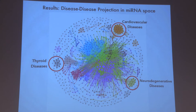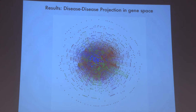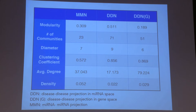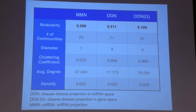In stark contrast, in the disease projection in gene space, there is far less clustering and it is far more homogenous. The micro-RNA to micro-RNA projection also has far less distinctive clustering, showing that many micro-RNAs target a wide range of diseases, causing overlap. This table summarizes the main metrics of the different projections. The two main takeaways are: first, the disease projection in micro-RNA space had the highest modularity and could be divided most easily into sub-networks, while the disease projection in gene space had the lowest modularity. Second, the clustering coefficient is very high in the disease projection, whereas in the micro-RNA projection it is much lower.